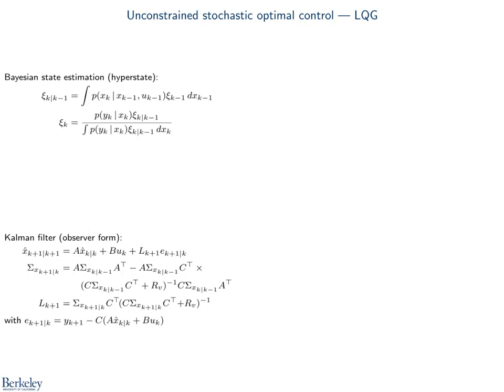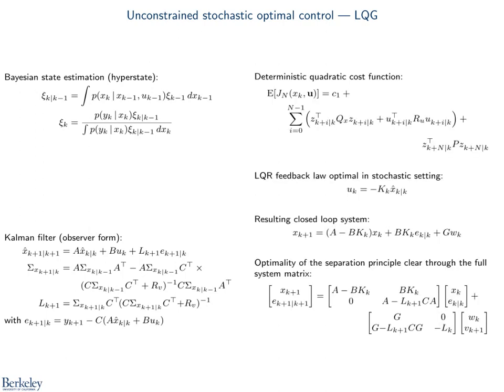The optimal state estimator is the well-known Kalman filter, which can be derived from the general Bayesian recursion above. The expected value cost function has a simple deterministic form, with Z the expected value of the state. The minimizing control law is linear in the state estimate with gain K. This results in stable closed-loop dynamics A minus BK. It is here clear that the separation principle holds when looking at the state and estimate error dynamics together. The bottom left zero in the highlighted matrix means the eigenvalues for control and estimation can be placed independently.